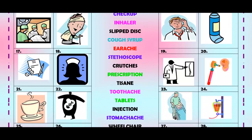Number sixteen — we call it the operating room. Number seventeen — like a plaster but used to hold your arm, or around the head — we call it a sling.